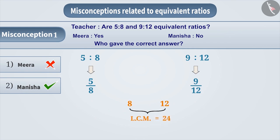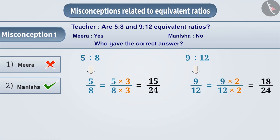So, the denominators of both of the fractions has to be 24. To achieve this, multiply the numerator and the denominator of the fraction 5 by 8 by 3 and 9 by 12 by 2. From this, we will get the new fractions as 15 by 24 and 18 by 24.